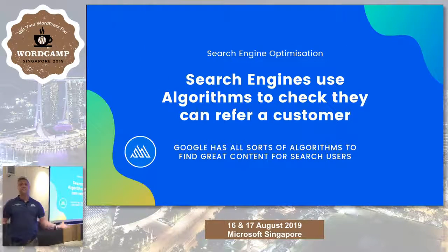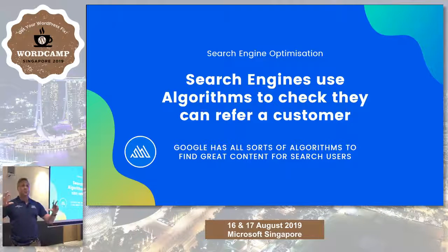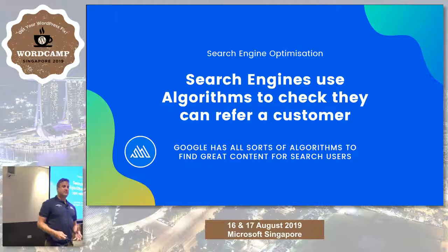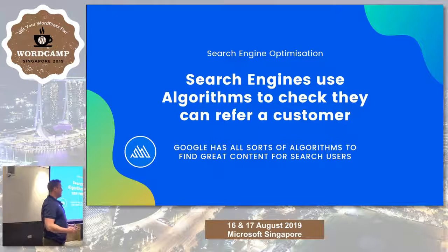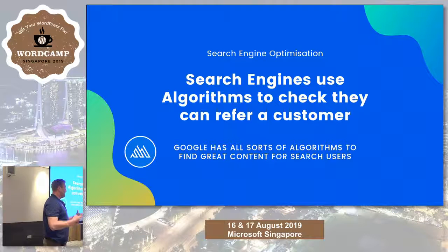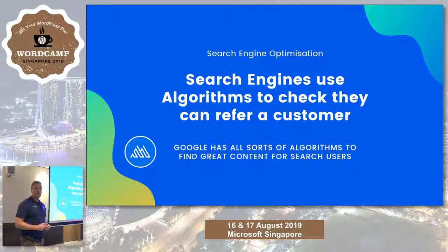How do search engines understand if they can trust you? They use algorithms. Google has robots, spiders, or crawlers that go around the internet looking at pages, grabbing them and sending them back to their data center where algorithms run over this index of data. The first famous algorithm looked at links. The founders of Google were in a library looking at white papers and asked: how do we know which one's worth reading? They concluded it's the one cited by other leading thinkers the most, and applied that same idea to web pages by counting links. That was the birth of PageRank.